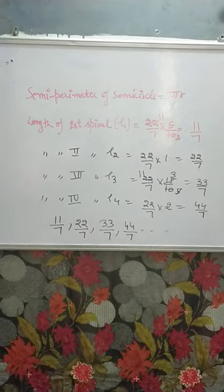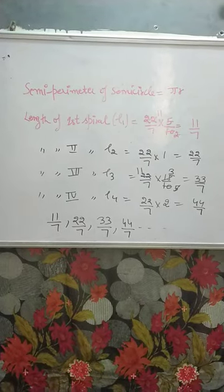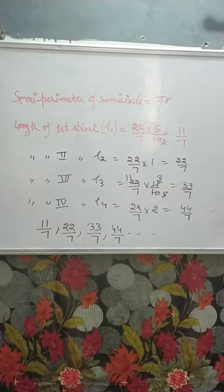We know if we want to find the length of anything, if that thing is semicircle, we need a semi perimeter formula which is pi R.